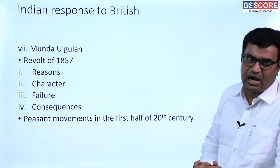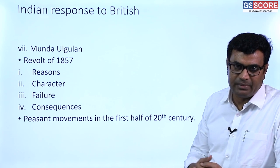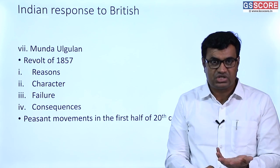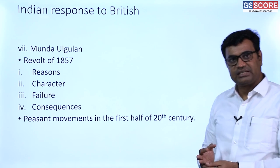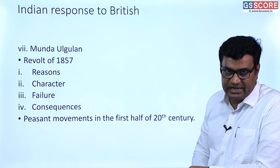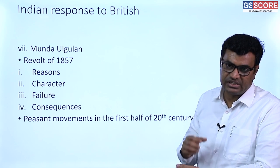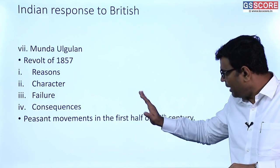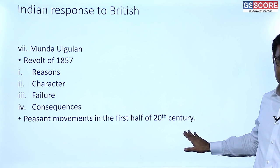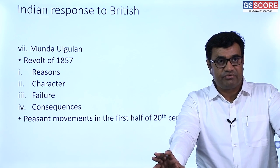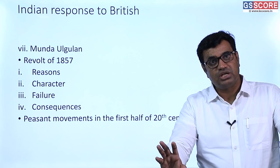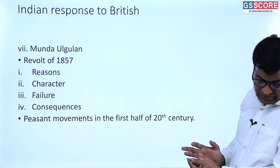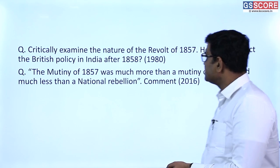The revolt in northern and central India was crushed by British with superior military strength due to lack of coordination among leaders. After the Revolt of 1857, British enacted the Government of India Act 1858, abolishing British India Company rule and increasing the proportion of European forces to prevent future revolts. Peasant movements continued in the first half of the 20th century, largely under the guidance of national leaders. By the beginning of the 20th century the Indian National Movement began to challenge British rule.